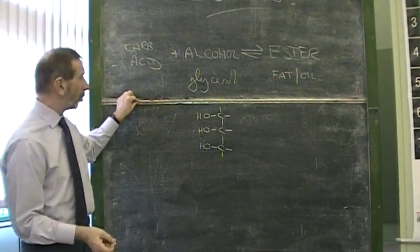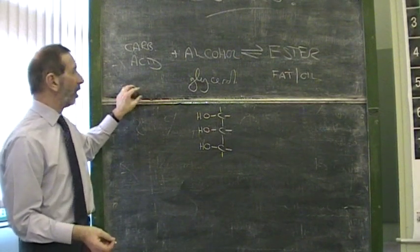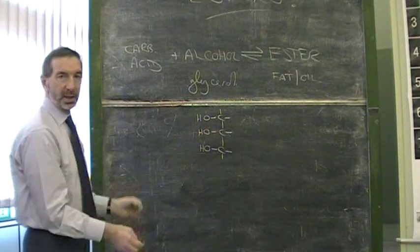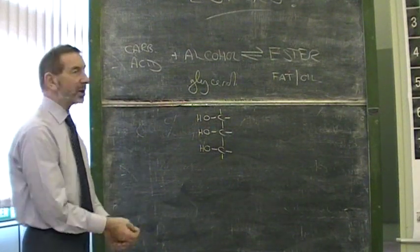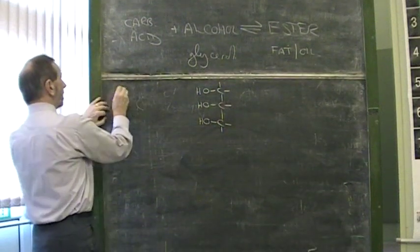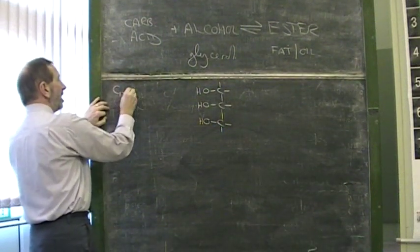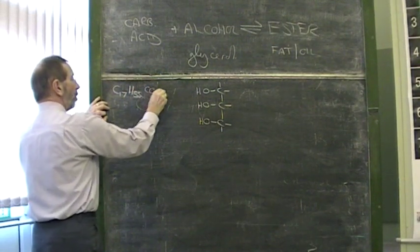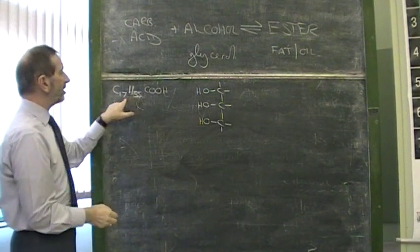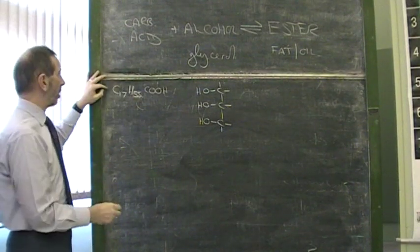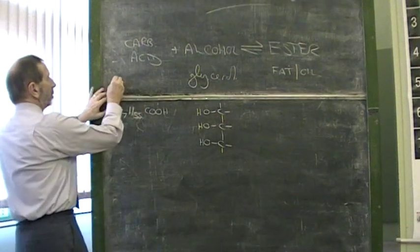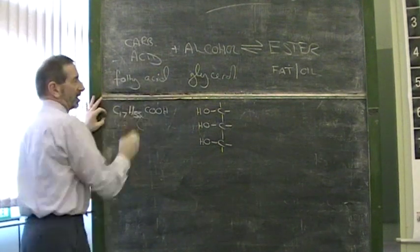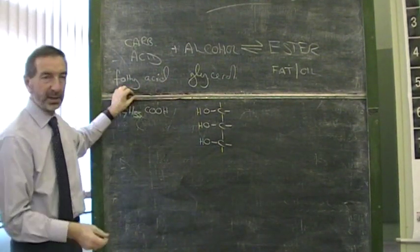And as for the acid, what makes it unusual is its sheer size. A normal carboxylic acid might have two, three, four carbon atoms. This thing has 16, 18, 20, with up to 24 carbon atoms. Here's a typical example, something like C17H35COOH. 17 plus 1, 18 carbon atoms, a monster of a molecule. These are called fatty acids. And they're called fatty acids because, you guessed it, they're the kind of acids that you'd find in fats and oils.